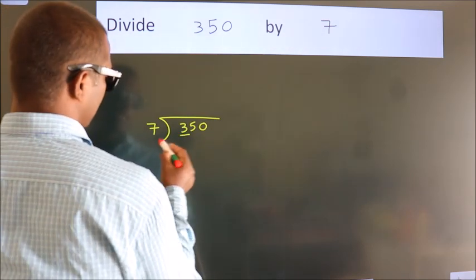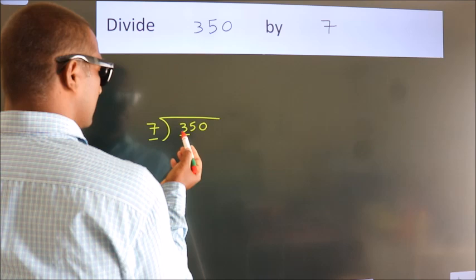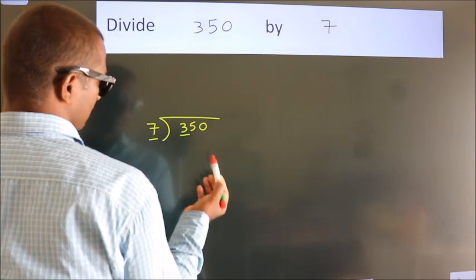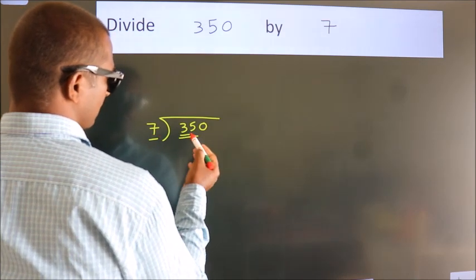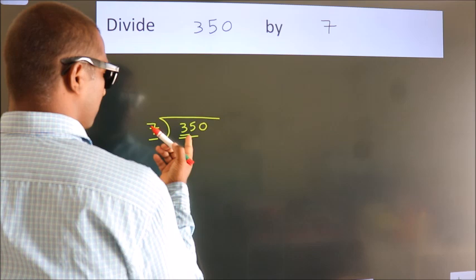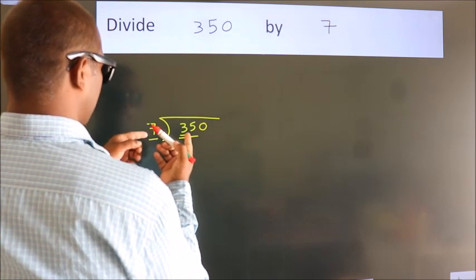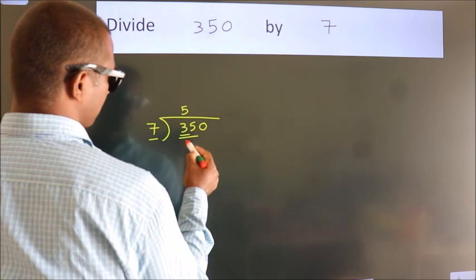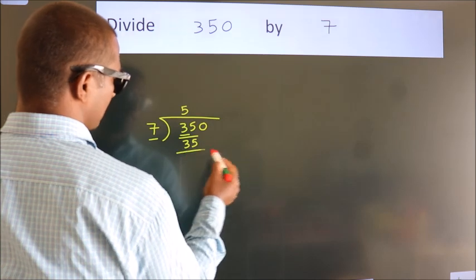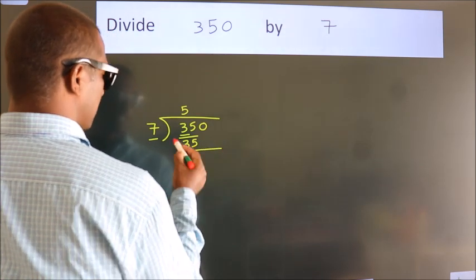Here we have 3. Here 7. 3 smaller than 7. So we should take 2 numbers. 35. When do we get 35? In 7 table. 7 fives, 35.